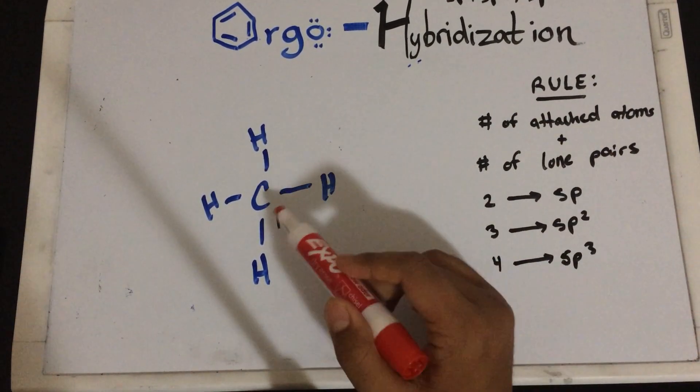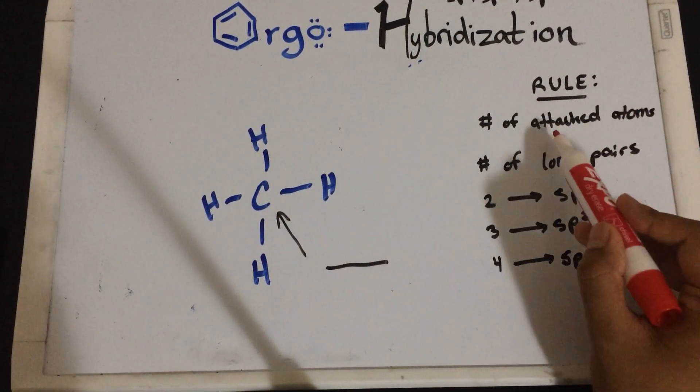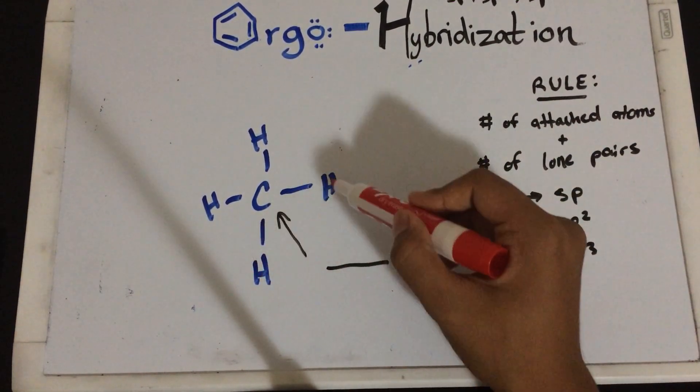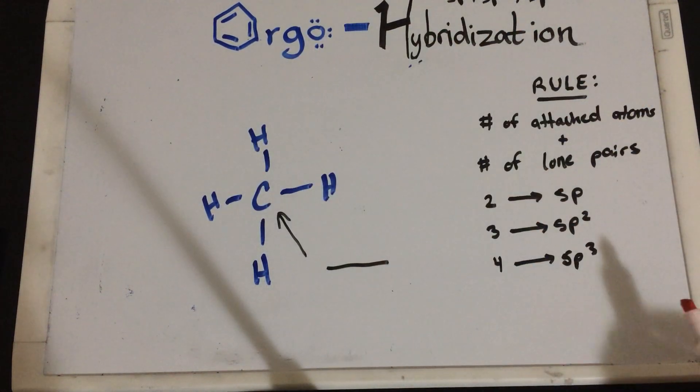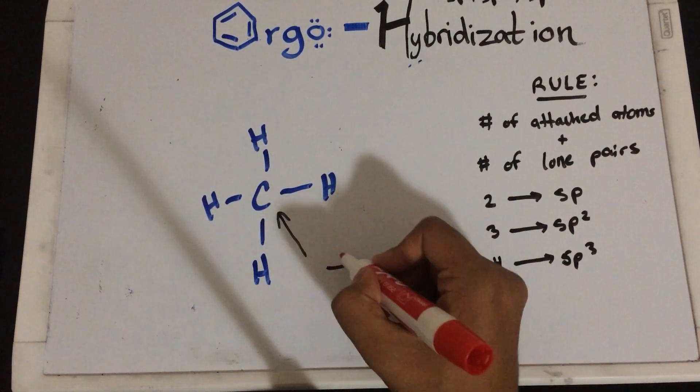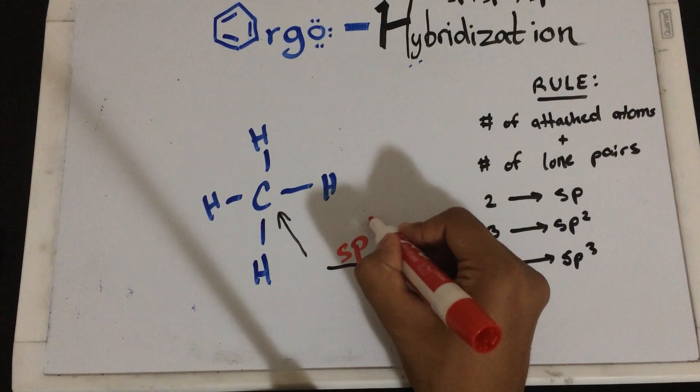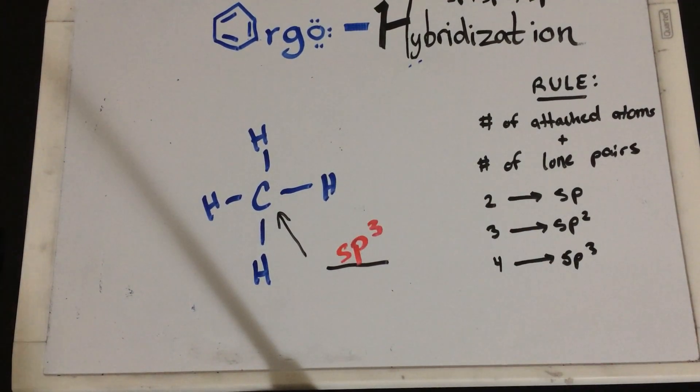Depending on what that number is, it'll be SP2, SP3, and so on. So, for this carbon, how many lone pairs does it have? None. How many number of attached atoms? It has one, two, three, four. It has four attached atoms, therefore, this is an SP3 hybridization. Pretty simple, right?